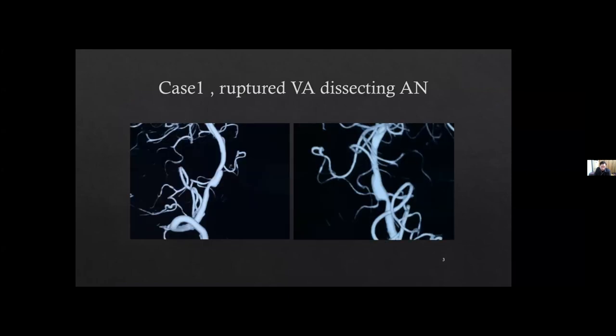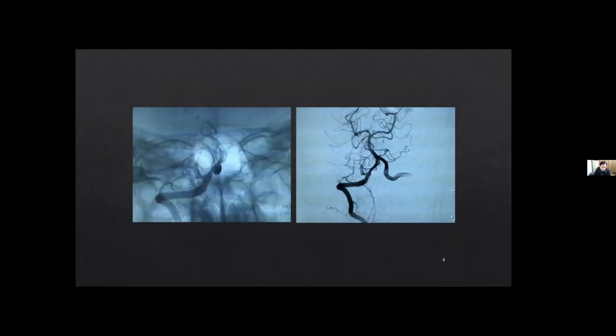This is case one: a ruptured vertebral dissecting aneurysm. We can see the dissection — the double lumen sign on the left side. We treated it with stent plus coils and it was treated perfectly.